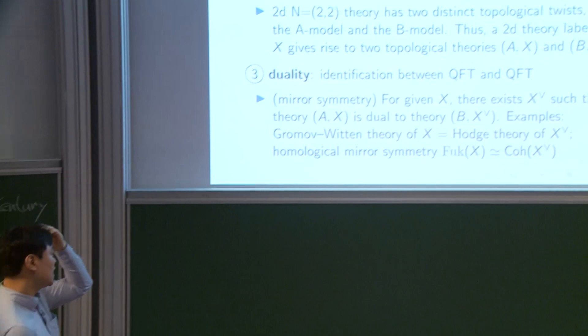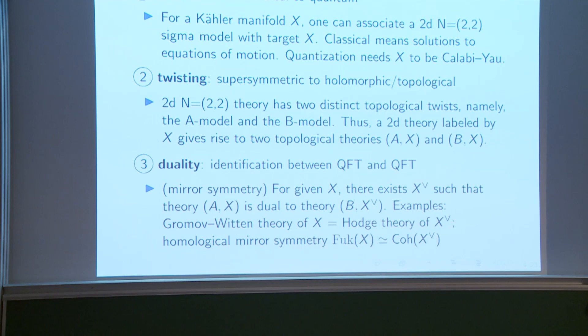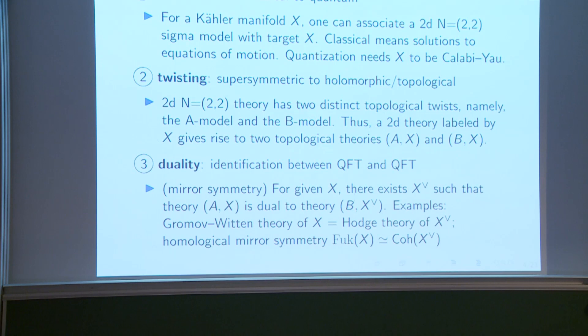Examples include Gromov-Witten invariants (curve counting invariants) being the same as periods of Hodge structures. There is also a stronger conjecture due to Kontsevich: homological mirror symmetry expects an equivalence between two categories.